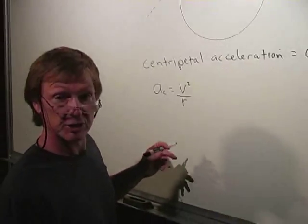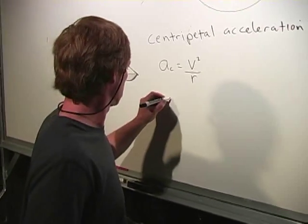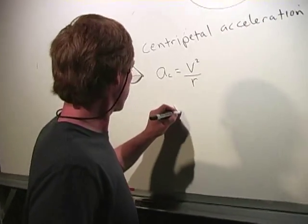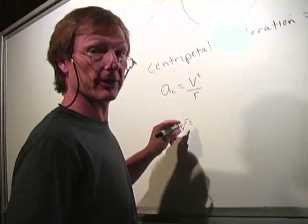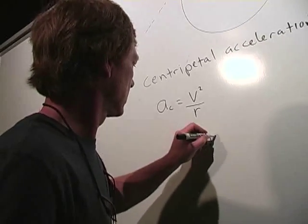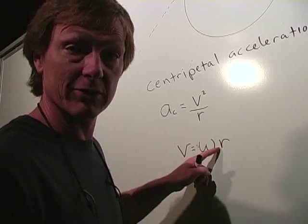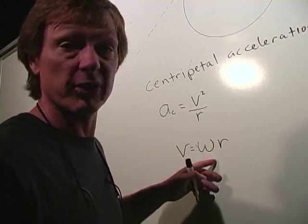Now, there's a relationship between angular velocity and linear velocity. Velocity, linear velocity is equal to angular velocity times the radius. You get radians per second times meters. You drop the radians, and you get meters per second.